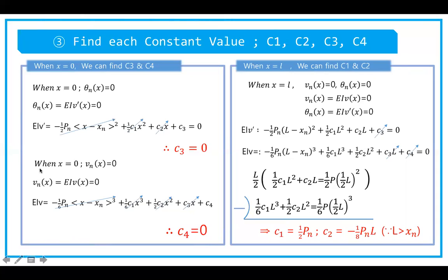We do the same thing by substituting every x with zero in the deflection equation when x equals zero, and we end up with C4 equals zero.